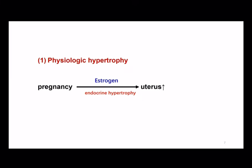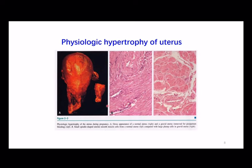Type 1, physiologic hypertrophy. Let's take the uterus as an example. The uterus is enlarged during pregnancy because smooth muscle cells were stimulated by estrogen. This is what we call endocrine hypertrophy. Here in picture A, this is the normal uterus. This is the gravid uterus. We notice that the pregnant uterus is nearly 20 times larger than the normal one.